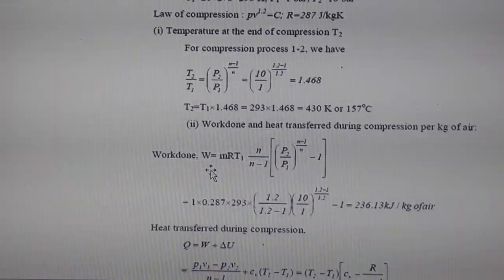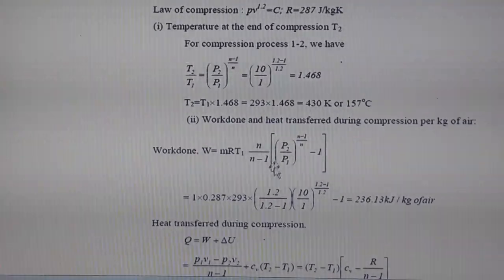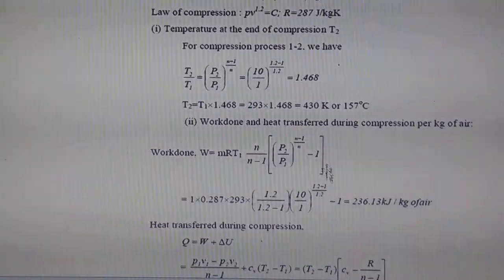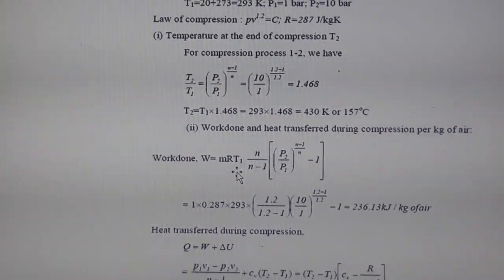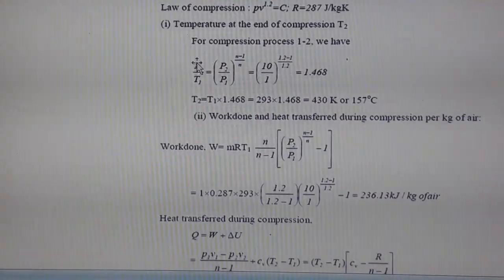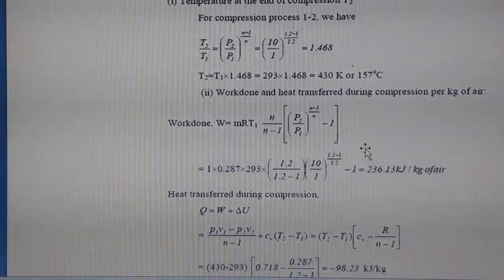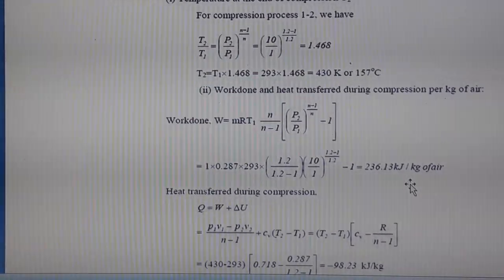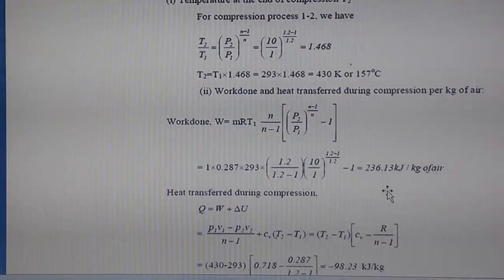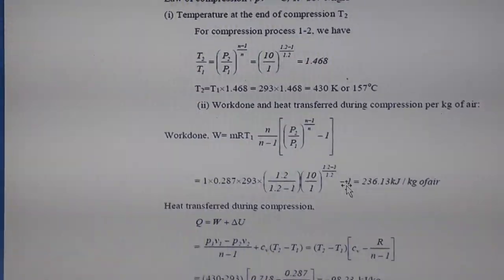To find indicated work, use: W = [n/(n−1)] × m × R × T1 × [(p2/p1)^((n−1)/n) − 1]. Since we calculate per unit mass of air, the work comes out to 236.13 kJ/kg. To get total indicated work, multiply by the actual mass of air.